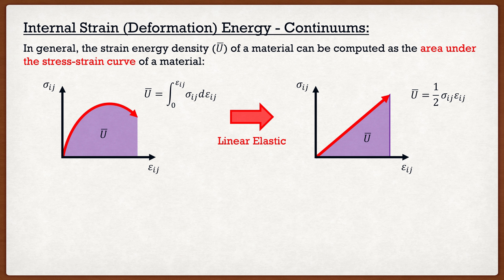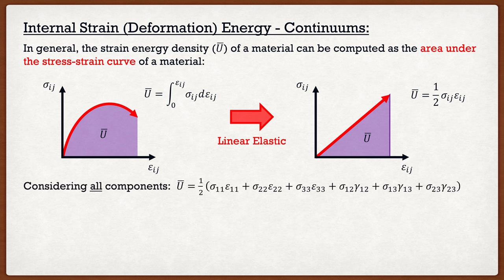Another thing we have to consider is that when we're dealing with continuums, they have six stress components: σ_11, σ_22, σ_33, etc. We have to consider each one of those components in our strain energy density. Therefore, u-bar is simply going to be one half of σ_11·ε_11 plus σ_22·ε_22 plus σ_33·ε_33, etc. So basically, we're just taking the area under the curve of all six of those stress components.